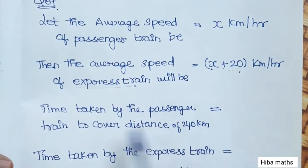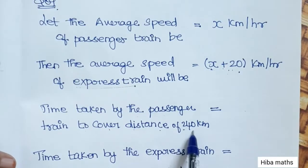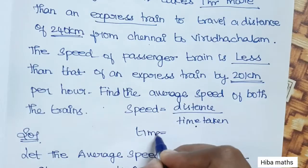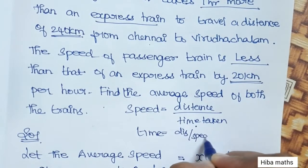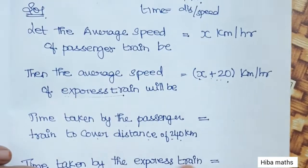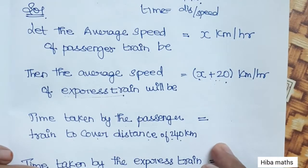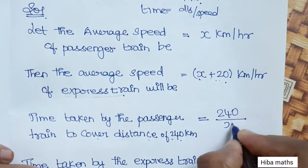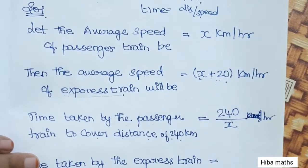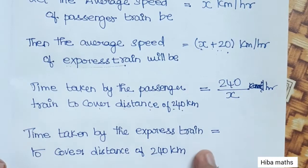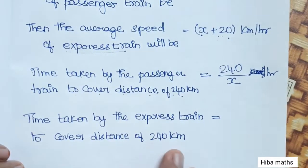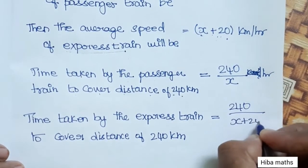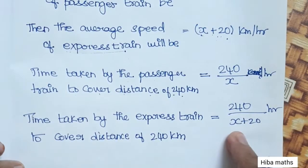Time taken by the passenger train to cover a distance of 240 km. Time is distance divided by speed. Distance is 240 and speed is x. For the express train, the distance is 240 and the speed is x plus 20.